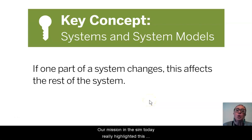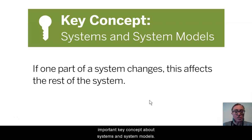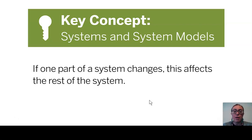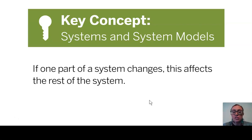Our mission in the sim today really highlighted this important key concept about systems and system models: if one part of a system changes, this affects the rest of the system. Remember, an ecosystem is just one type of system that has a bunch of interacting parts. When we changed one of the inputs of our system — when it came to the process of photosynthesis — one of the outputs changed.